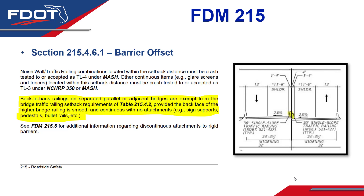Last but not least, still under Section 215.4.6.1 for barrier offsets, it's becoming more common — particularly in crowded cities — to have dual bridges in a back-to-back configuration. In this case, the backside of the traffic railing on the higher side can be placed inside the zone of intrusion or setback distance for the traffic railing on the lower side. New language in the FDM addresses this: back-to-back railings on separated parallel or adjacent bridges are exempt from the bridge traffic railing setback requirements of Table 215.4.2, provided the back face of the higher bridge railing is smooth and continuous with no attachments — such as sign supports, pedestals, or bullet rails. For an item that's smooth, rigid, and unavoidable, an errant vehicle impacting the barrier on the low side would likely slide along without snagging, which is considered acceptable from a crashworthiness standpoint.